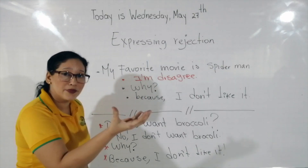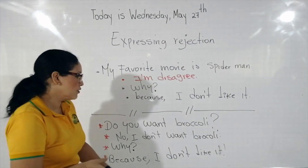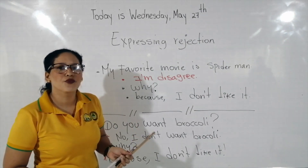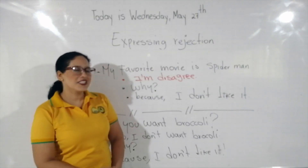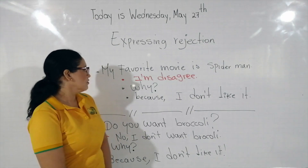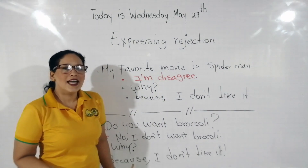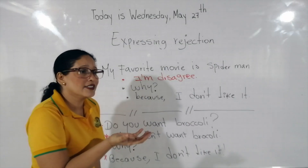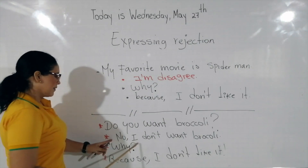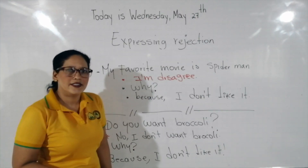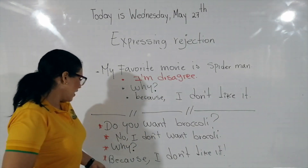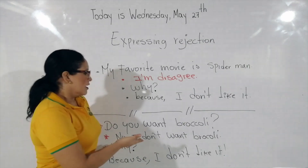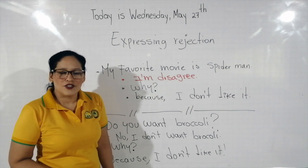Do you want broccoli? — ¿Quieres broccoli? No, I don't want broccoli. — No, no quiero broccoli. Why? — ¿Por qué? Because I don't like it. — Porque no le gusta. Son formas de rechazar una invitación o una oferta — como cuando me ofrecían broccoli y dije que no quería. Esa es una forma de rechazar.